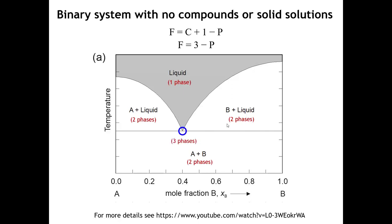There is one place in the phase diagram where the liquid, solid A, and solid B are all three in equilibrium with each other, and that point is called a eutectic point. In this kind of eutectic phase diagram, the eutectic point also represents the minimum in the melting point. This is analogous to putting salt on roads in winter — on the phase diagram between salt and water, adding salt lowers the melting point. There is a certain mixture called a eutectic mixture which has the minimum melting point.